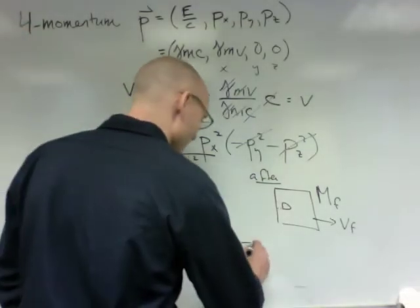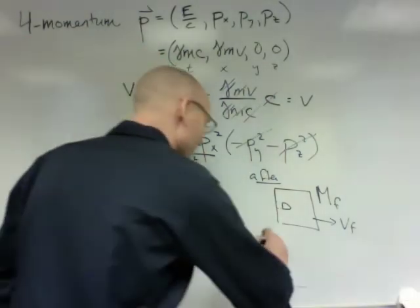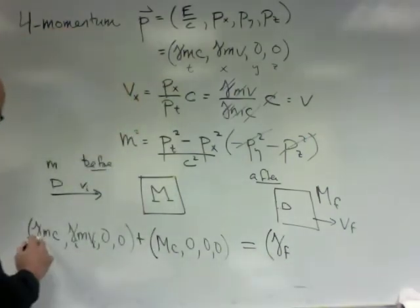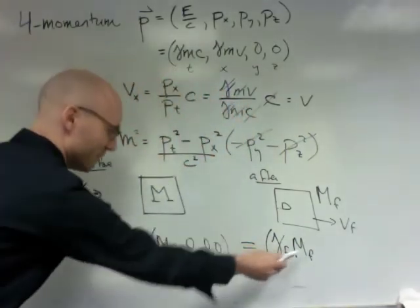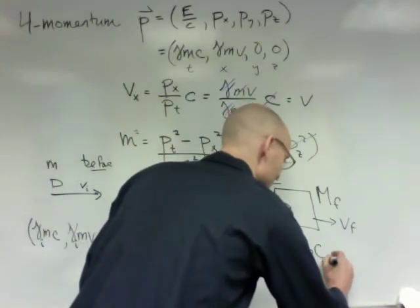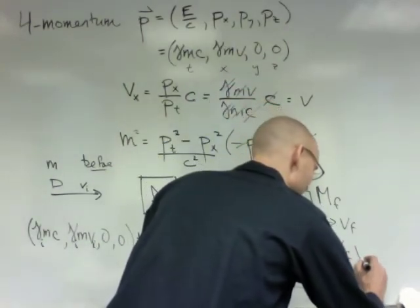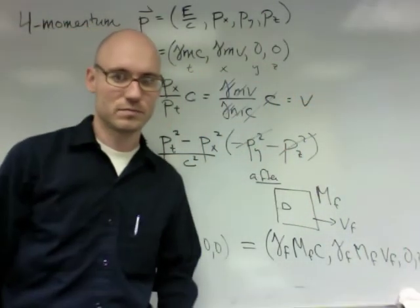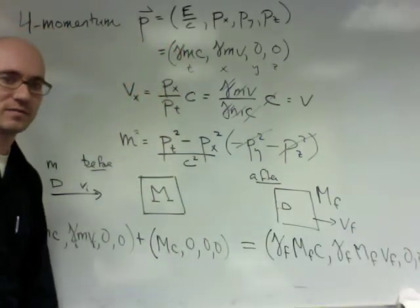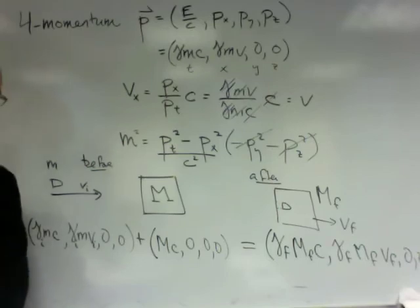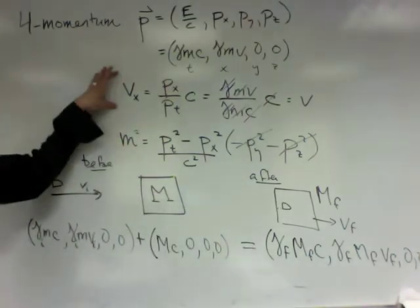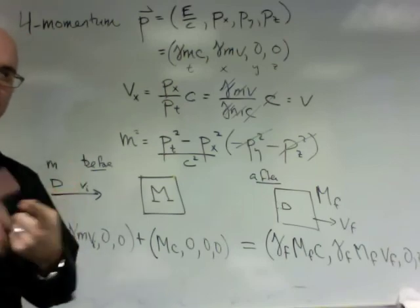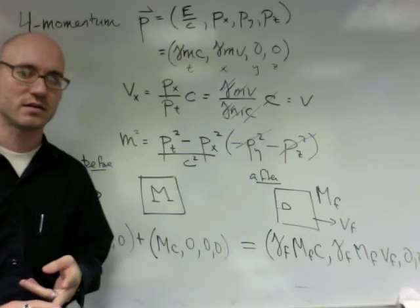When I add together these two momenta, I'm going to get the final momentum. And the final momentum, we're going to be able to think about as being gamma f, the final gamma, which will be different from the initial gamma, the final mass, which will be different, it's going to turn out, than the sum of the masses, m c, and then gamma f, m f, v f, 0, 0. One of my 0s went off the edge of the screen there, but it doesn't really matter. So now we can work out the speed of this final block in the way that we just suggested, and we can work out the mass of this final block in the way that we just suggested. We're just computing, we are believing our postulates of the four momentum, and we're believing that this is a conserved quantity in this collision.